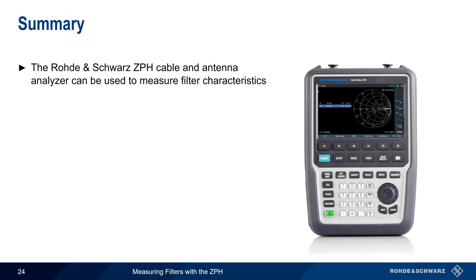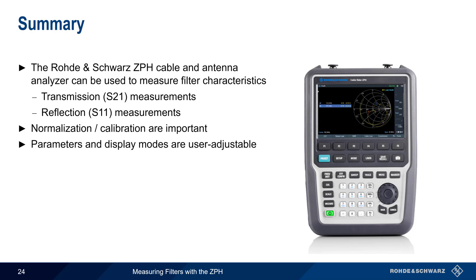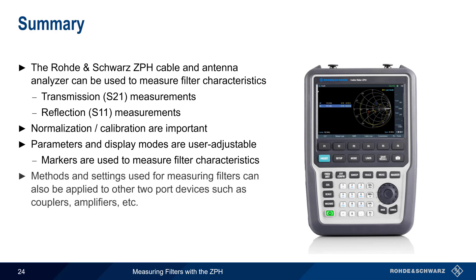Let's end with a brief summary. The Rohde & Schwarz ZPH cable and antenna analyzer can be used to measure filter characteristics, including both transmission or S21 measurements as well as reflection or S11 measurements. Normalization or calibration are important for ensuring accurate measurement results. Measurement parameters and display modes are user adjustable, and filter characteristics such as frequency, bandwidth, attenuation, and ripple can all be easily measured using markers. Although this presentation has been focused on filter measurements, the methods and settings used for measuring filters can often also be applied to other two-port devices, such as couplers, amplifiers, etc. This concludes our presentation, Measuring Filters with the ZPH. If you'd like more information about network measurements, filters, or network analyzers from Rohde & Schwarz, please see the links in the video description.